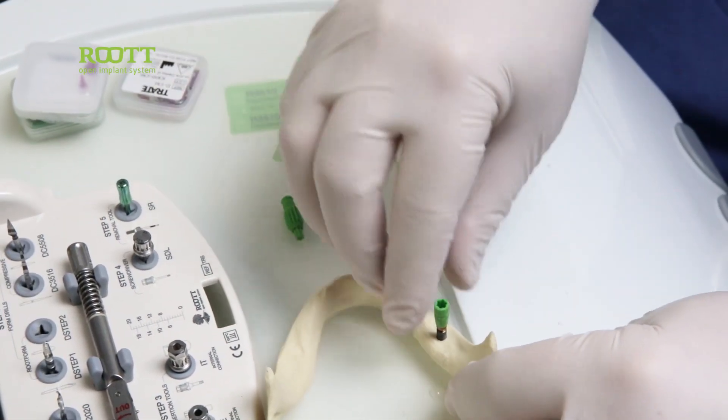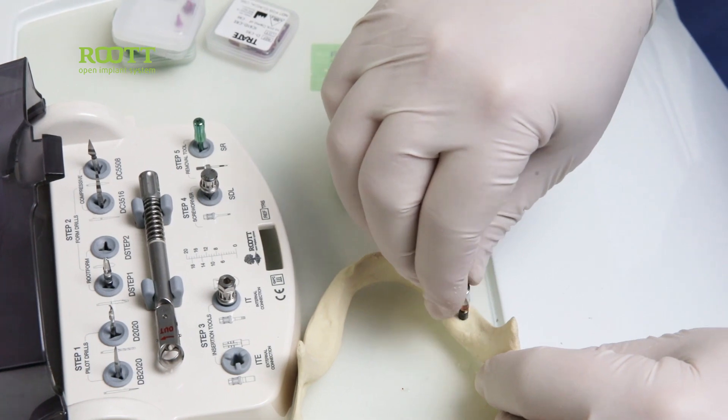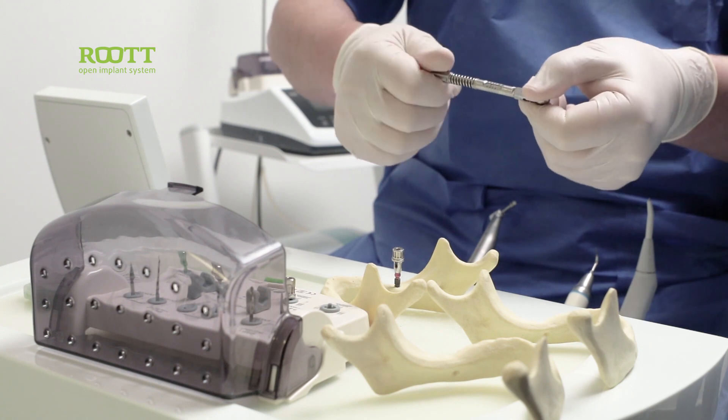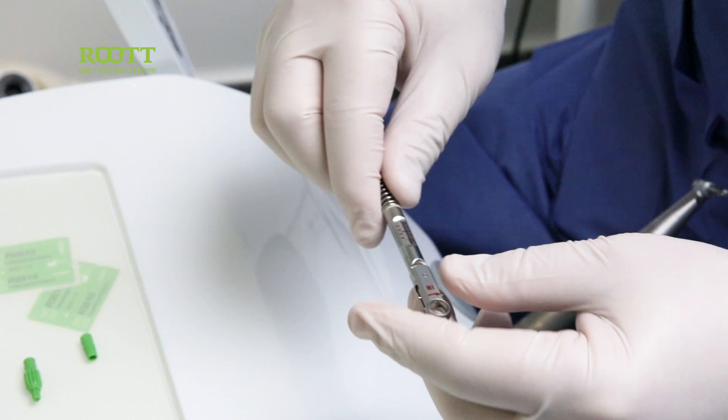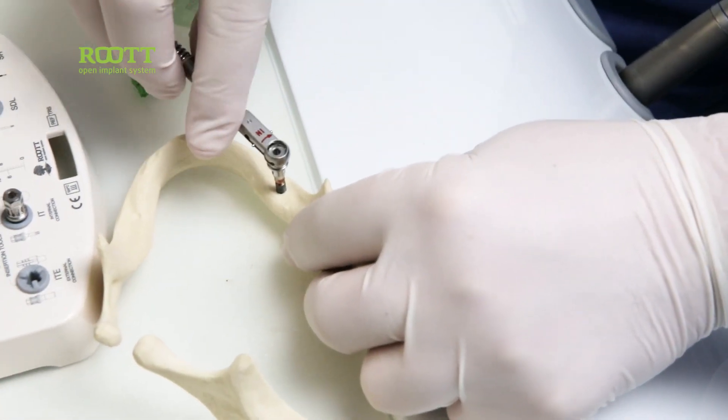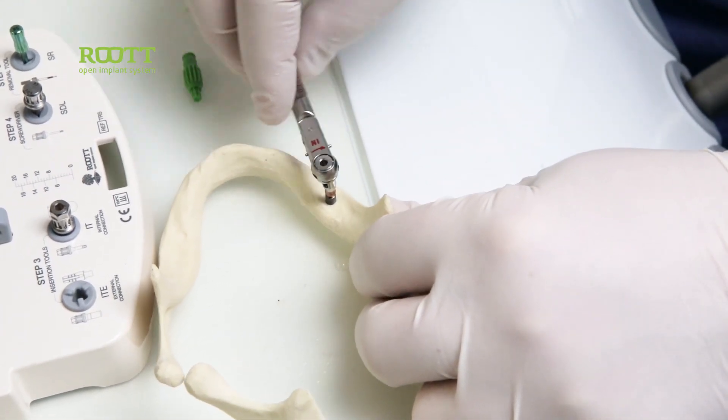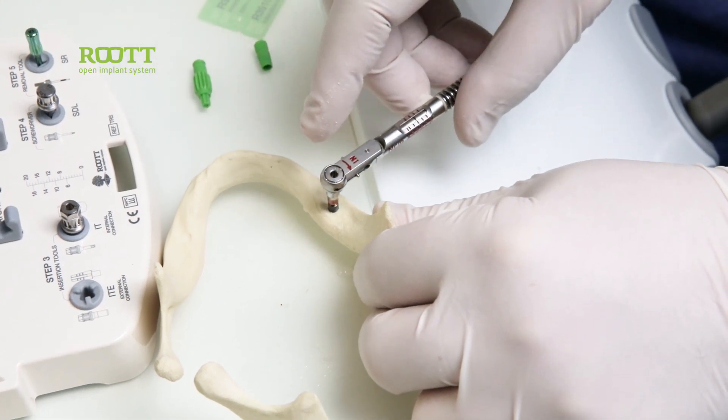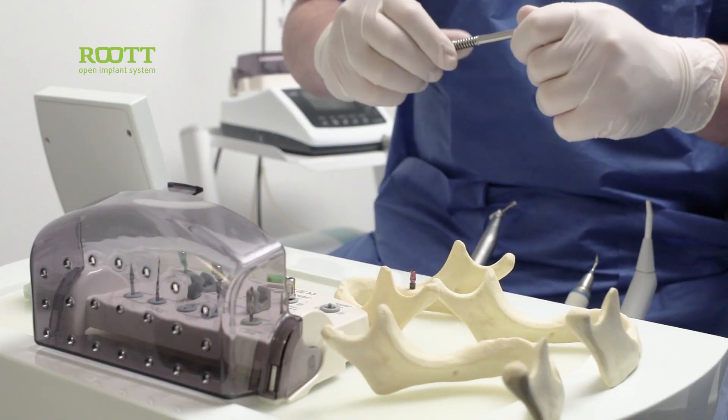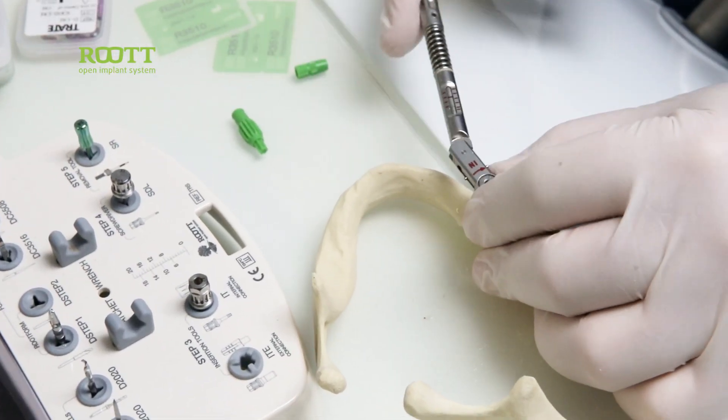We take out the holder, then we use the abutment driver. We put it and we use the ratchet. The ratchet should be at 40 Newton maximum, because otherwise we will hurt the abutment. We will damage the abutment. So we start turning until we arrive. Once we arrive, you cut here until we arrive to our 40 Newton. It breaks.